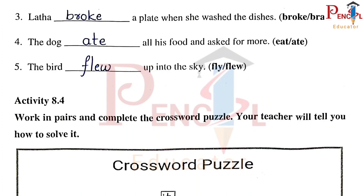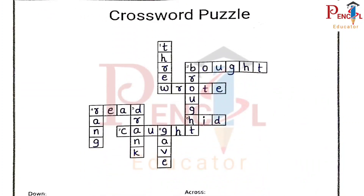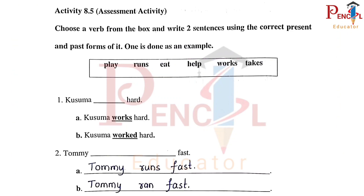Fourth one: The dog ate all his food and asked for more. Fifth one: The bird flew up into the sky. Activity 8.4 — Crossword Puzzle. Downwards: Threw, Brought, Rank, Drank, Gave. Across: Boss, Bought, Wrote, Hid, Read, Caught.